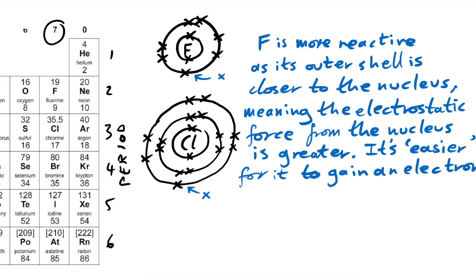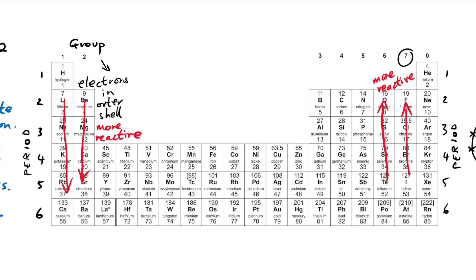So what happens with reactivity for halogens - group seven and group six - is the opposite of what it is for group one. They actually get more reactive as you go up the group, because they're not looking to get rid of an electron - they're looking to gain one. It's much easier to gain an electron into an outer shell that's closer to the nucleus. So you know how reactivity changes going up or down groups one, two, six, and seven. We don't really talk about reactivity with groups three, four, and five because it's not that useful.